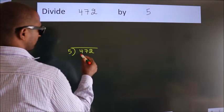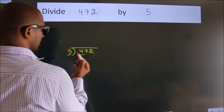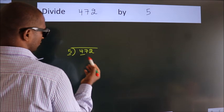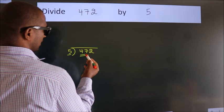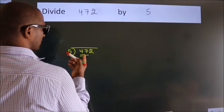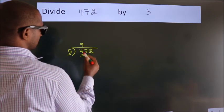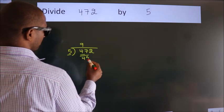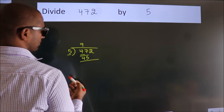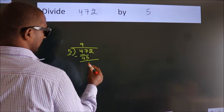Here we have 4. Here 5. 4 smaller than 5. So we should take two numbers. 47. A number close to 47 in 5 table is 5 nines 45. Now we should subtract. We get 2.